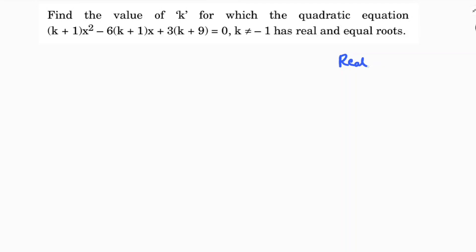For real and equal roots, the discriminant b² - 4ac will be zero. Comparing the equation with the standard form ax² + bx + c, we identify the coefficients.